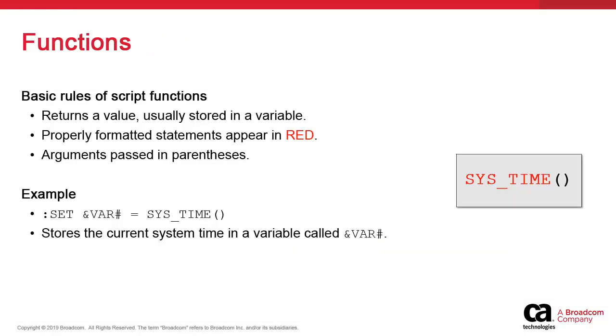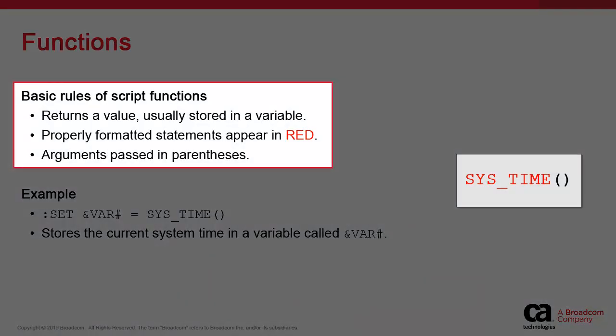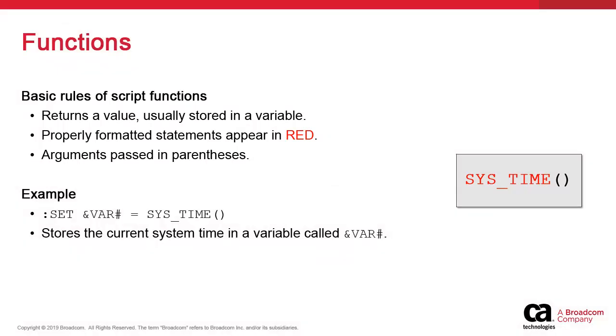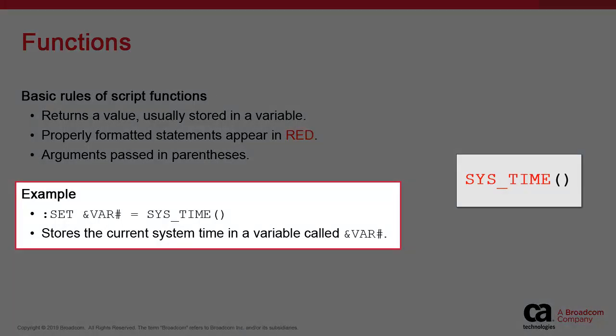Functions allow us to manipulate data in the system, generally for the purposes of retrieving values. Functions are processed, and then the output of that process is usually stored in a variable. Functions appear in red, and will be followed by arguments in parentheses. You can only have one function per line. In our statement, we use a simple combination of a set command, a variable called ampersand var hash, and the sysTime function. This will store the current system time in the variable.